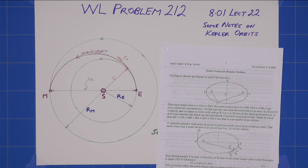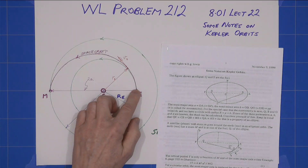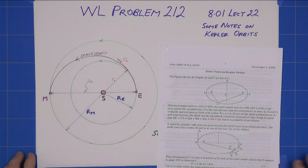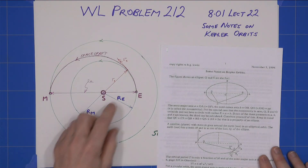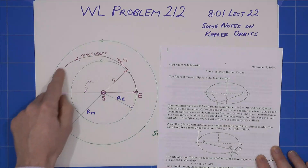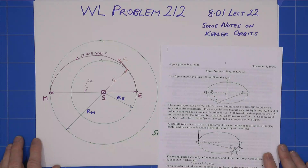This is Keith's solution to Walter Lewin's problem 212. In it, we're wanting to send a spacecraft from Earth to Mars through an elliptical orbit.